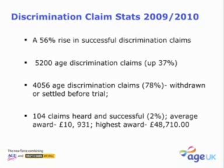What that means is that if a claim is withdrawn before trial, it either means a settlement has been reached, or a party has been convinced to withdraw on account of seeing little prospect of success, or having obtained some kind of satisfaction. We do not have specific figures on the distribution between withdrawn and settled, but we can say most claims are actually settled, based on figures from ACAS themselves. 104 claims were actually heard by tribunals, of which 2% of the total figure were successful, with an average award of £10,931 and the highest award of £48,710.